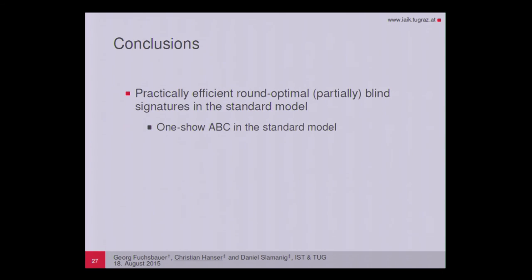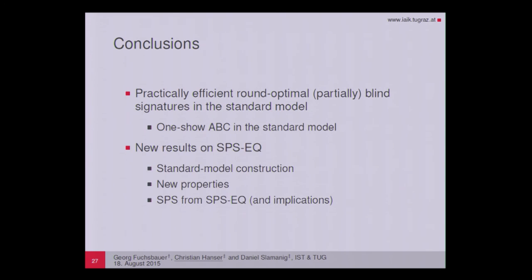To conclude: we have presented a new way to build efficient round-optimal blind signatures, and shown how to derive partially blind signatures and one-show ABCs — all secured in the standard model. We have also presented new results on SPS-EQ: a standard model construction, new properties, and the fact that SPS-EQ implies ordinary structure-preserving signatures.